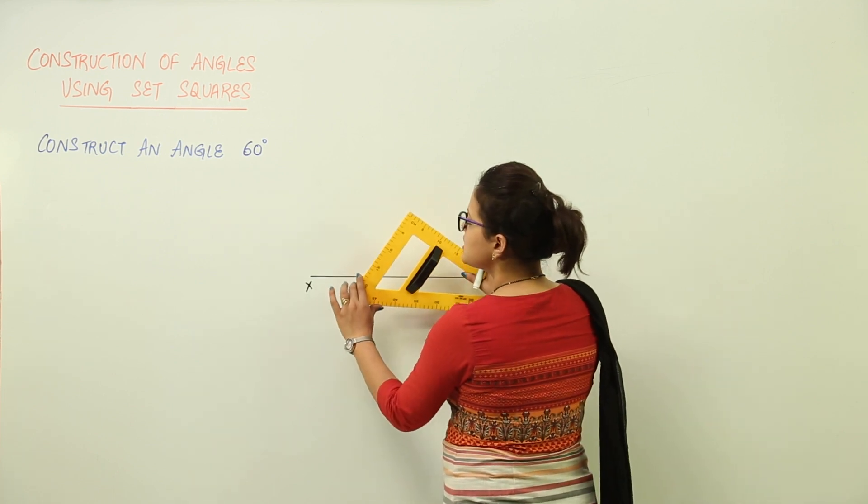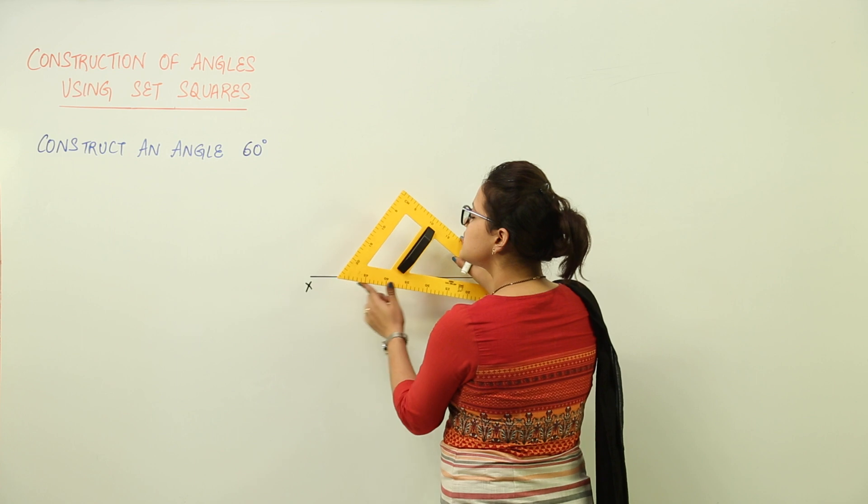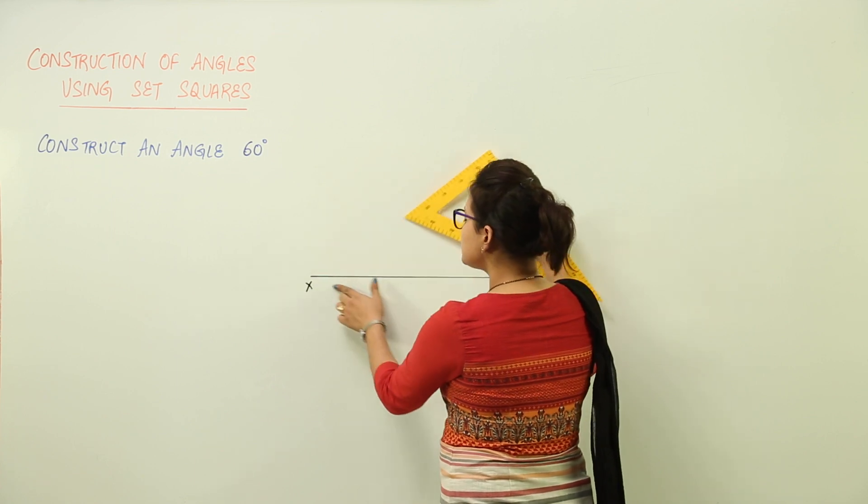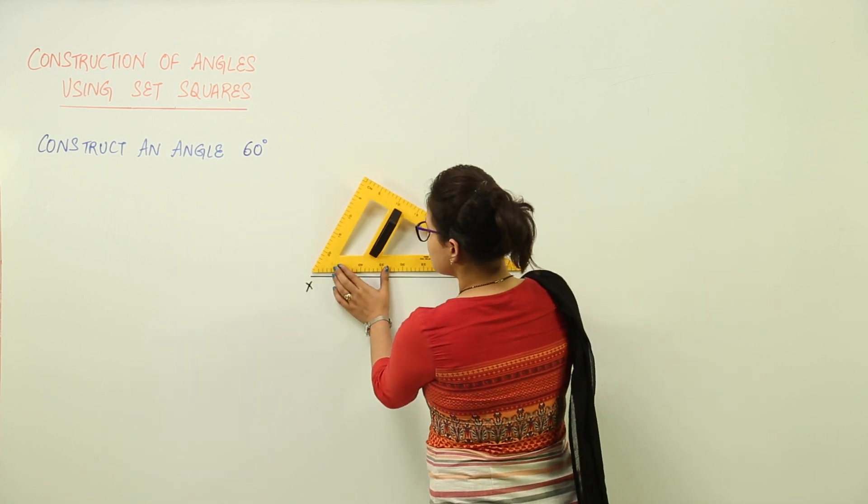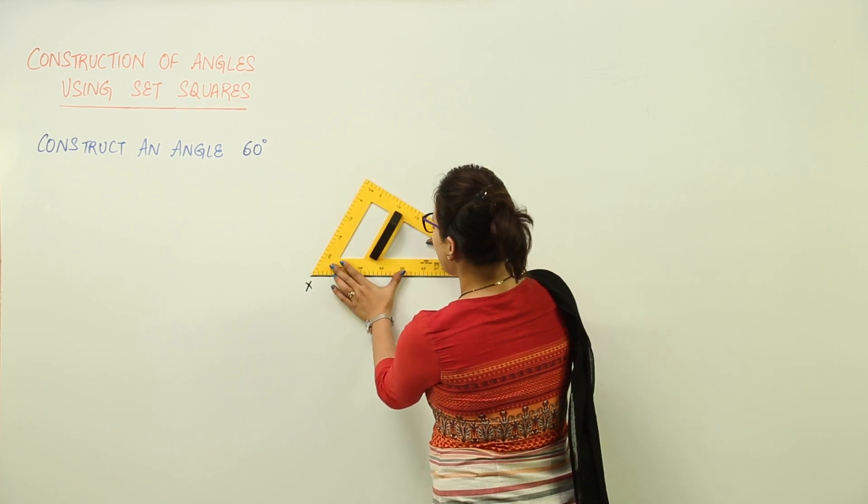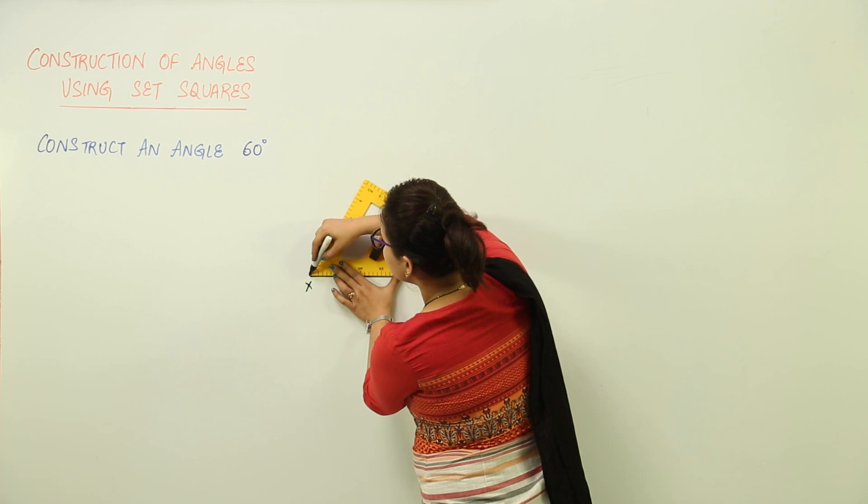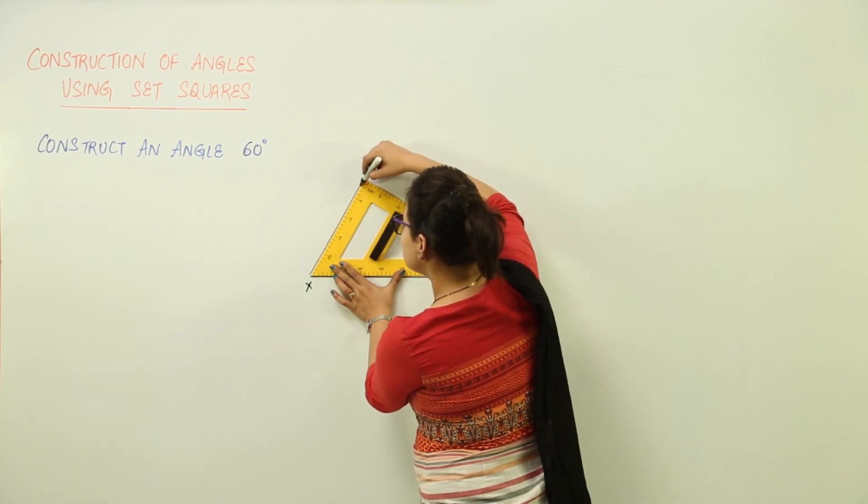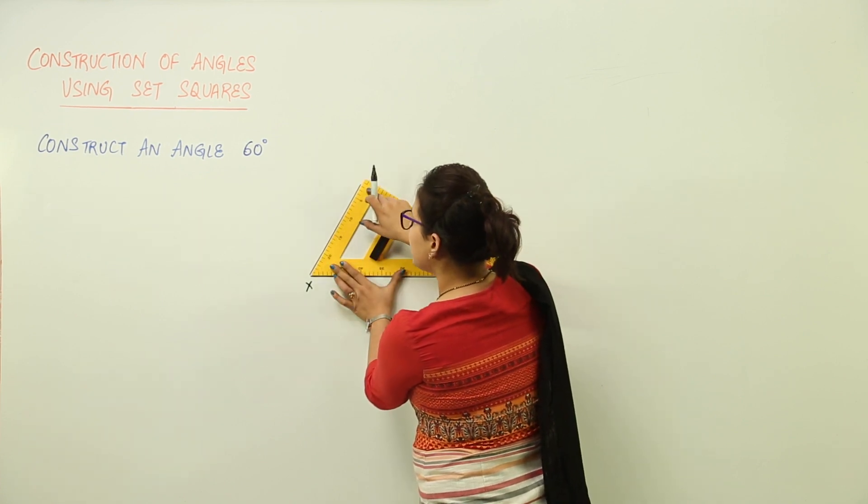So, I keep my 60 degrees angle such that one of the arms of the 60 degree angle coincides with the line XY. So, I will place the set square like this and I am going to make the other arm running across the other edge having 60 and 90 degrees.